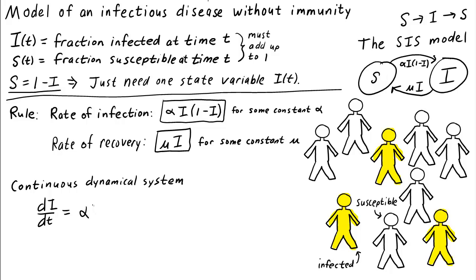This transition increases the fraction of infected individuals, so it should show up with a positive sign in our differential equation for the change in i. The recovery transition leads to fewer infected individuals, so it should show up with a minus sign in our differential equation. So the differential equation di/dt equals alpha times i times 1 minus i minus mu times i is our infectious disease model.